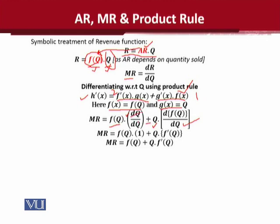You know that the derivative of Q with respect to Q will cancel out and the answer will be one, so it will have no effect. Q can be carried as it is, and this can be called f̄(Q) after differentiation. One will have no effect on f(Q), so it remains as it is. You have seen how we can obtain marginal revenue once we take the derivative and apply the product rule, even in situations where marginal revenue does not exist in numerical form but rather in symbolic form.